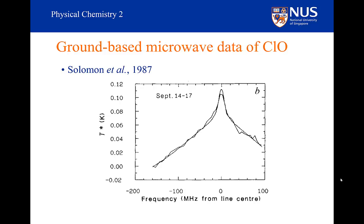Notice the width of this spectral line — it differs from other spectral data because those measurements were at very low pressures, giving incredibly narrow lines. Here we have a broad spectral feature due to pressure broadening, because the ClO is emitting within the atmosphere. ClO emitting from 20 km altitude is broadened by the pressure at that altitude, whereas emission from 35 km would be much narrower, since the pressure at 35 km is about 10 times less.